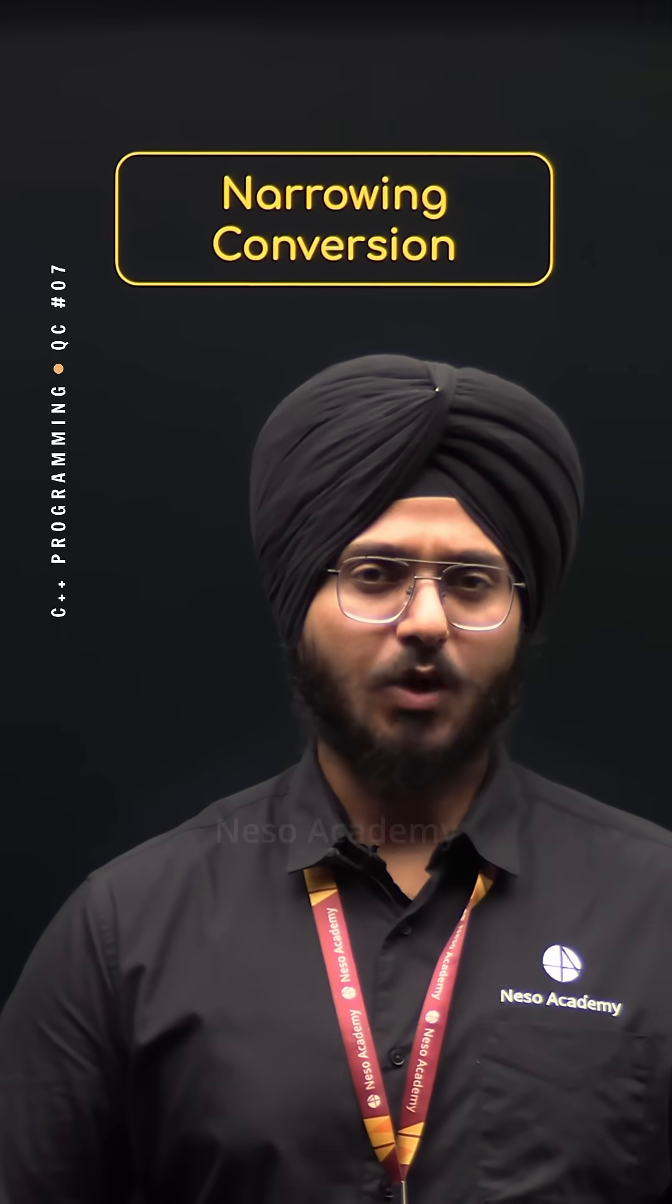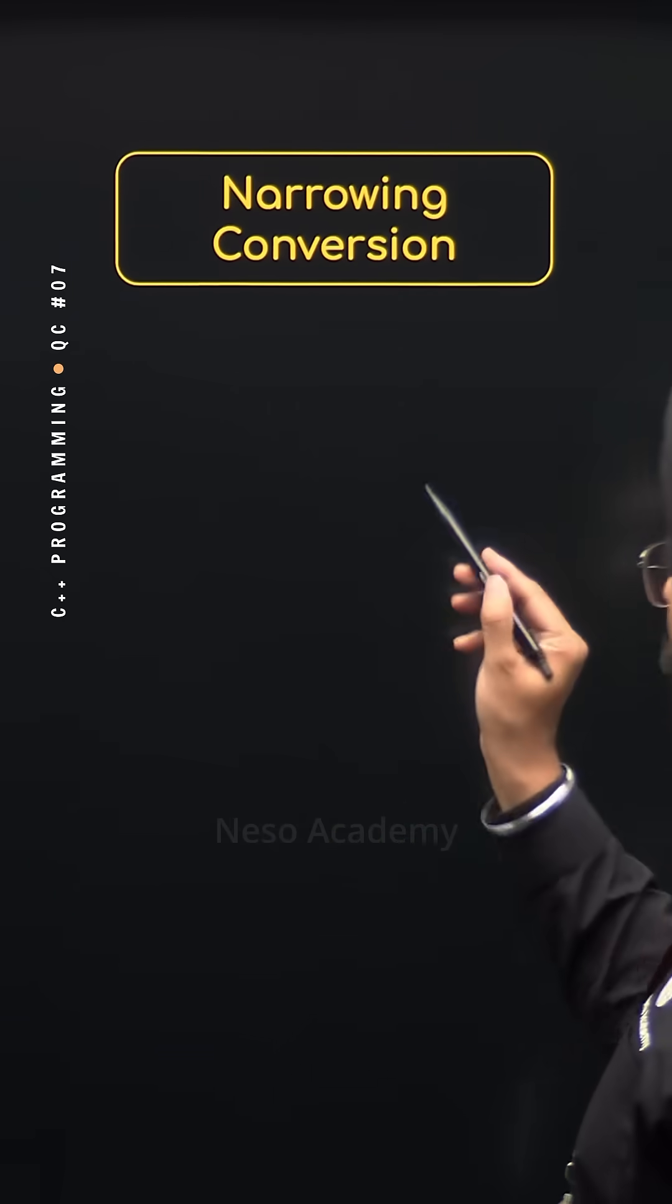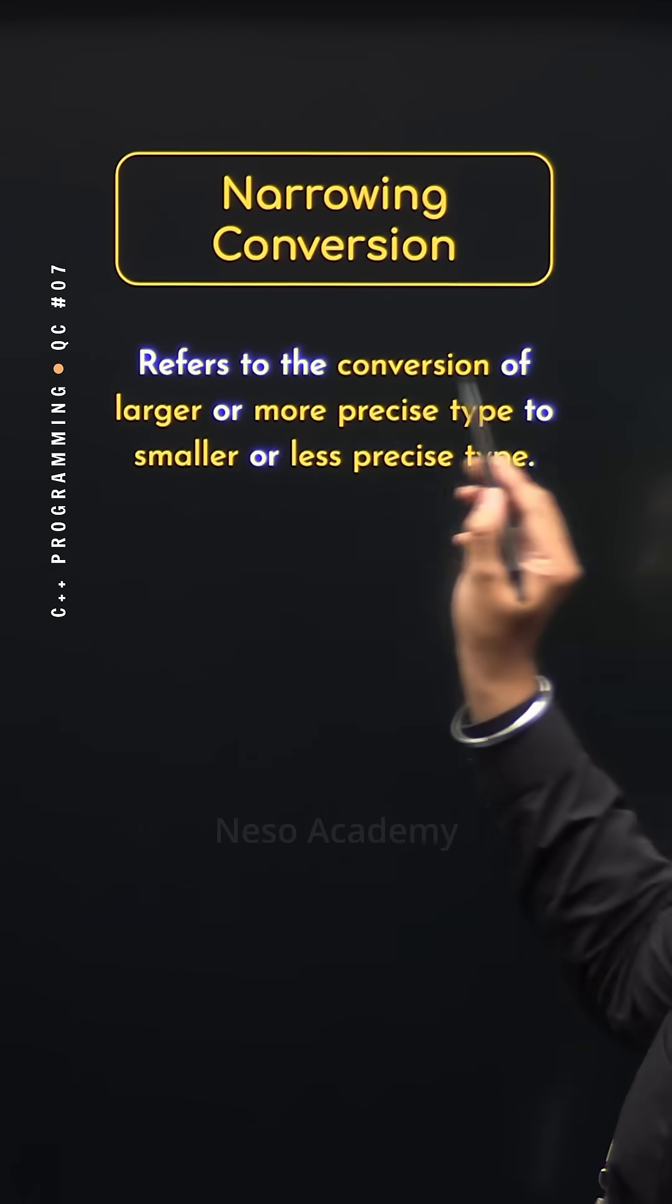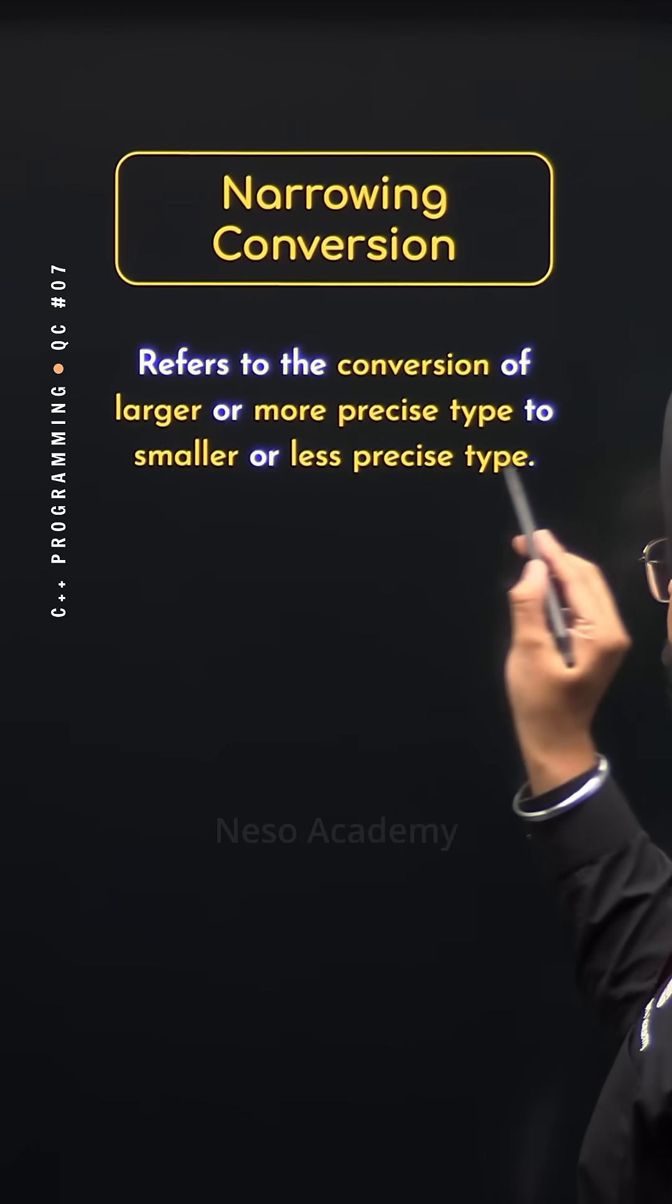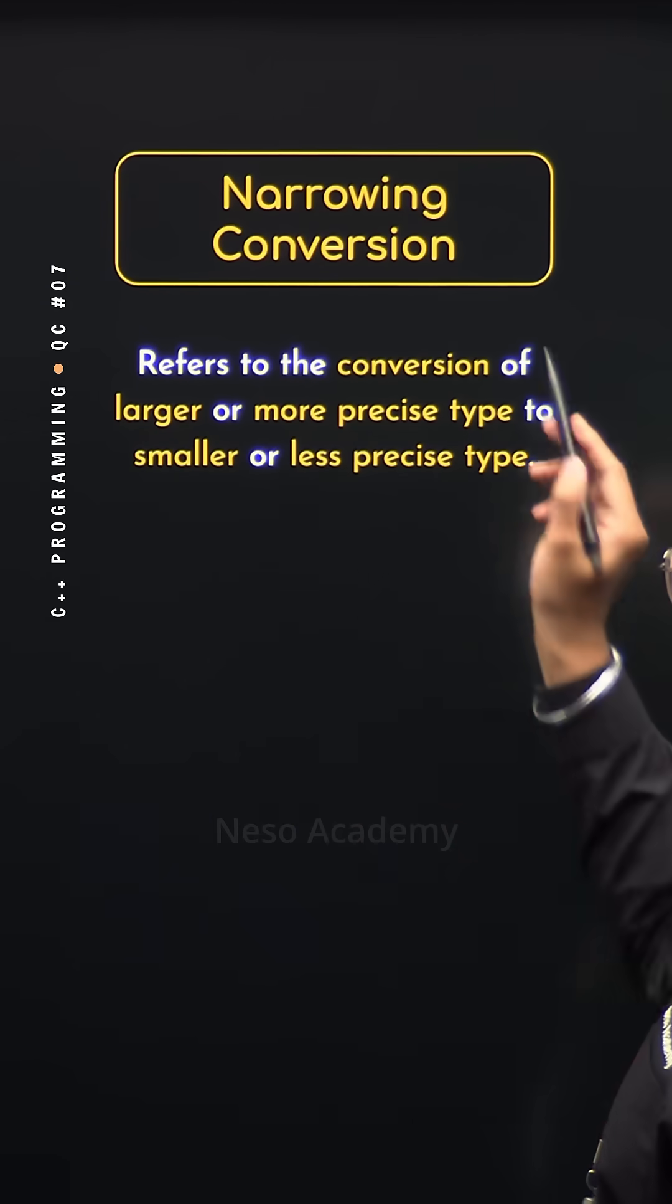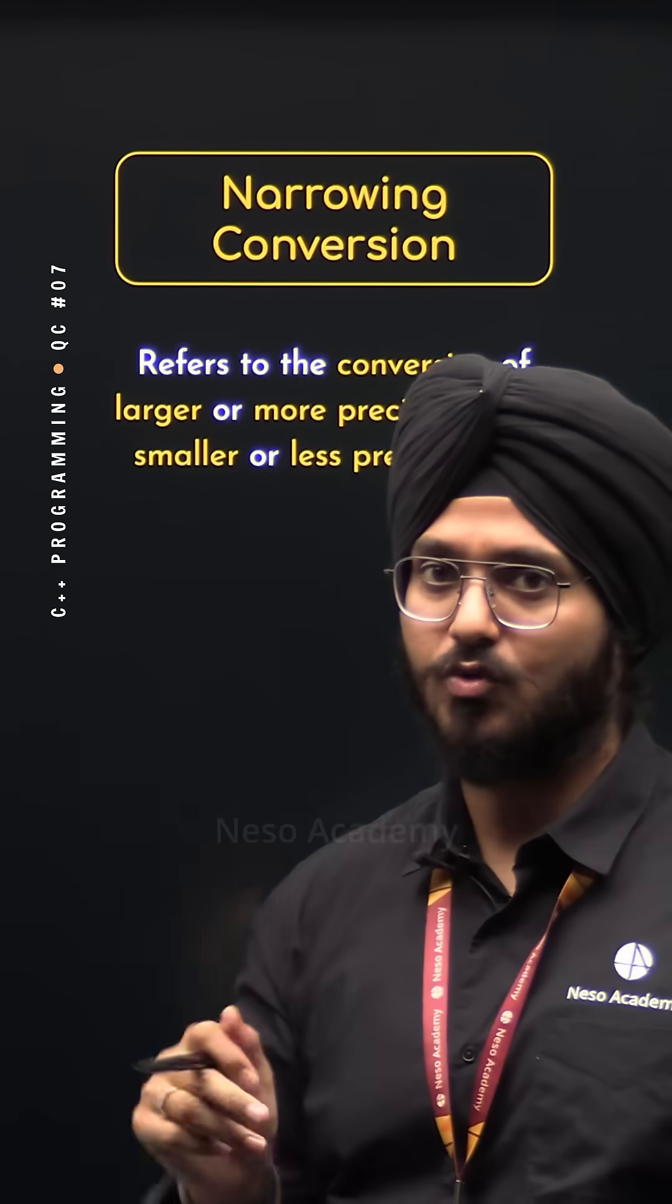Do you know the concept of narrowing conversion in C++? Let's find this out. Narrowing conversion refers to the conversion of larger or more precise type to smaller or less precise type. It's called narrowing conversion because larger type is narrowed down to smaller type.